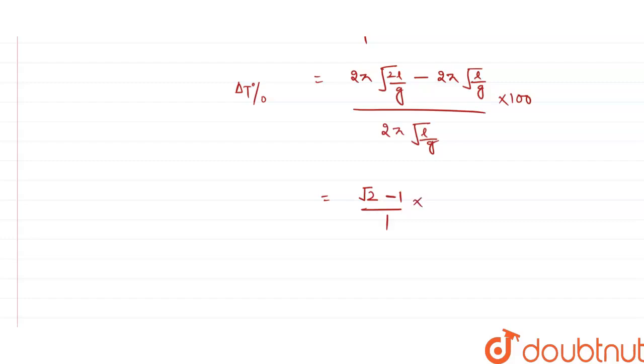Now the value of root 2 is basically equals to 1.414, so putting this value I will have 1.414 minus 1, that is 0.414 into 100, so this value is coming out to be 41.4 percent.